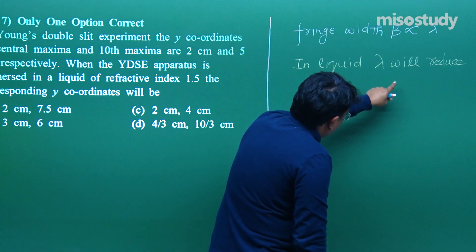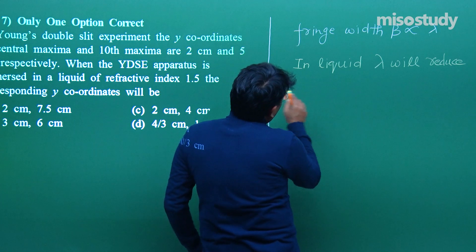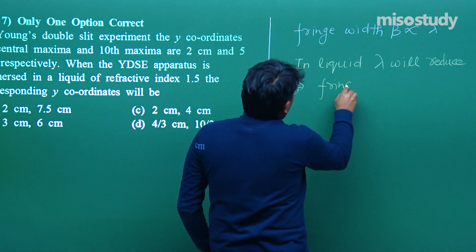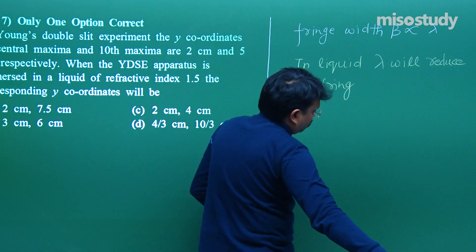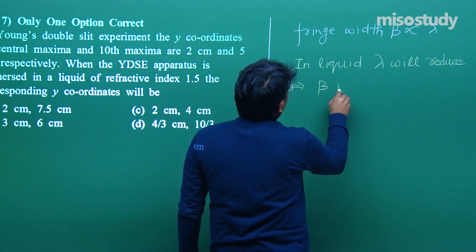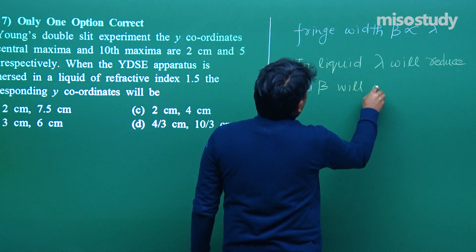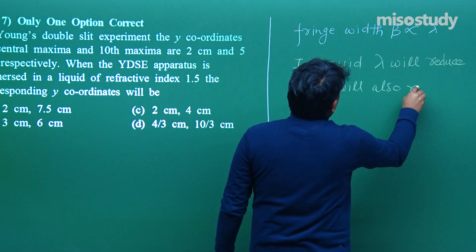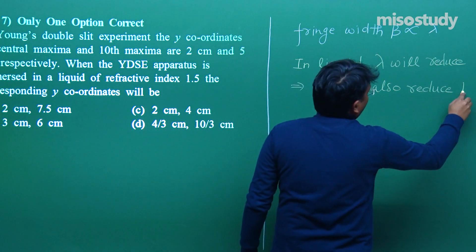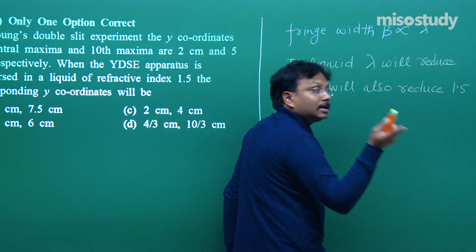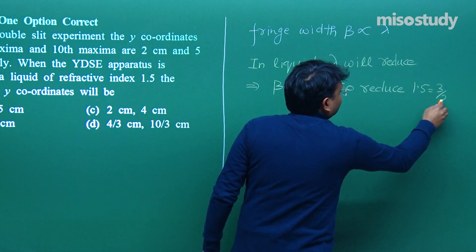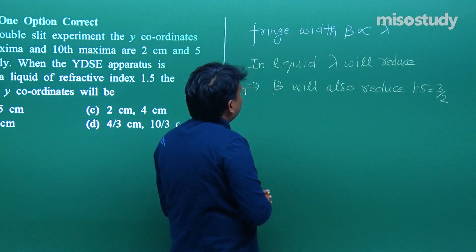Therefore, fringe width beta will also reduce — by 1.5 times, or you can write 3/2 times. It's up to you. Although all this work we are doing on rough paper, since JEE Advanced exam is CBT mode — computer based test. So this is all rough work, but I need to explain it to you properly. Do it quickly, but after practice.